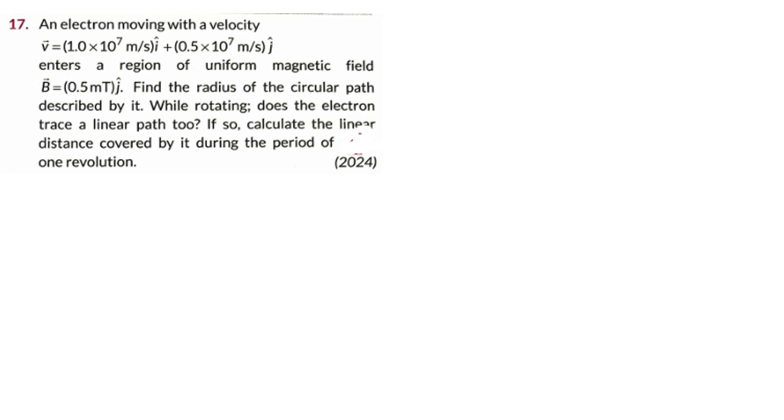Question number 17. An electron moving with velocity V vector enters a region of uniform magnetic field. Find the radius of the circular path described by it.